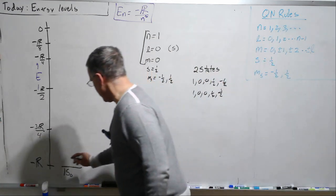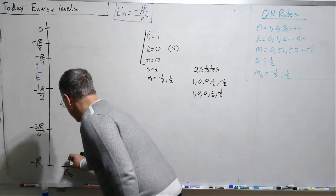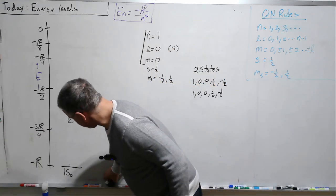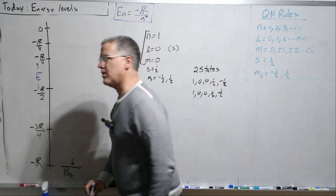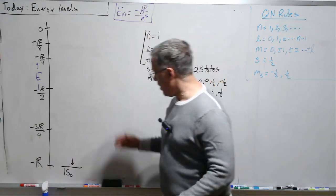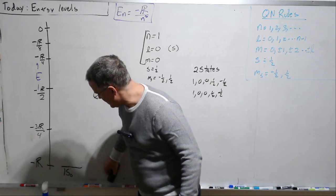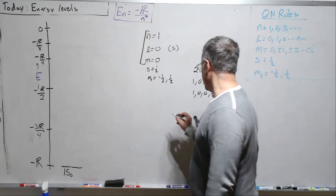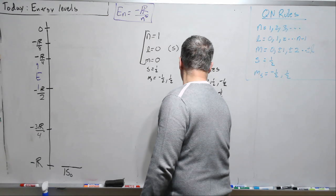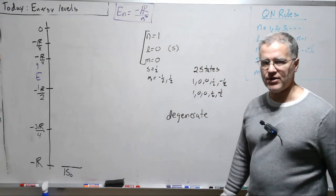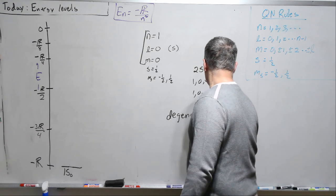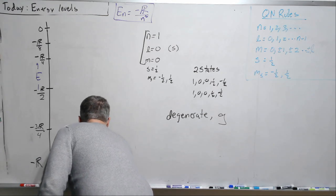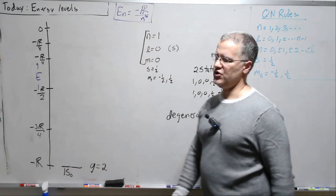So this is the 1s0 state, with the understanding that we can have a spin up or a spin down. And so we leave this empty with the understanding we could put an up arrow representing a plus 1/2, or a down arrow representing a minus 1/2. Both of these states are at the same energy, and when two or more states are at the same energy, we call that a degeneracy, or they are degenerate. And that's usually, G is the symbol for degeneracy. So here, G equals 2.